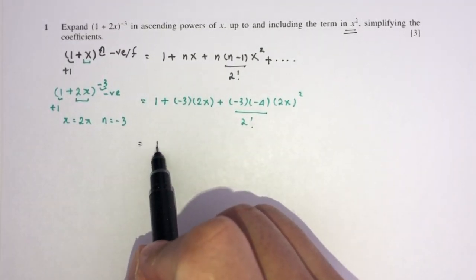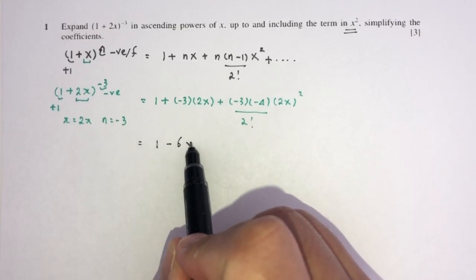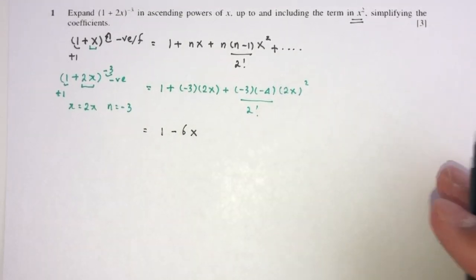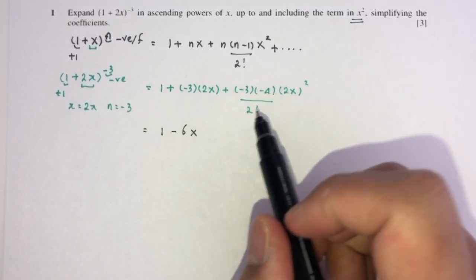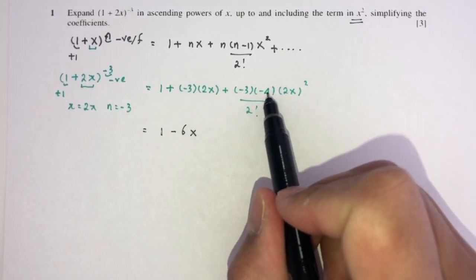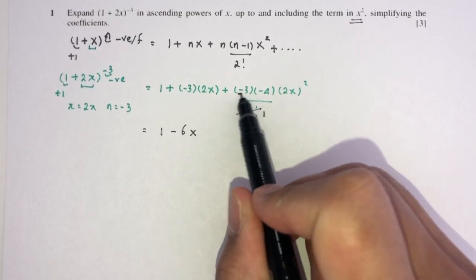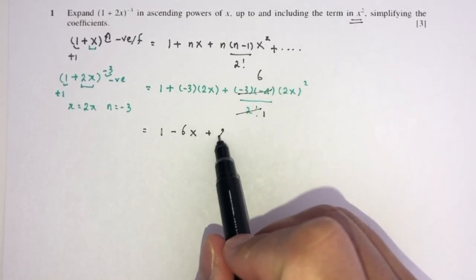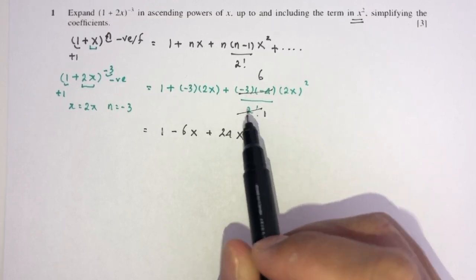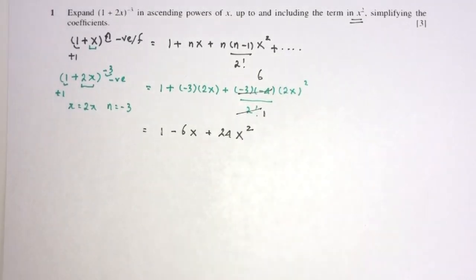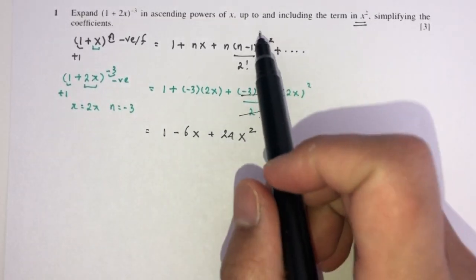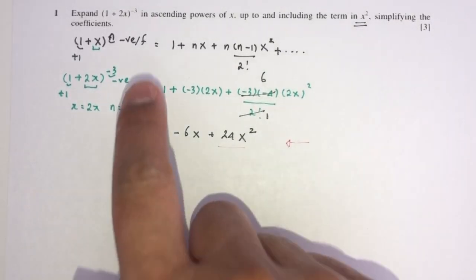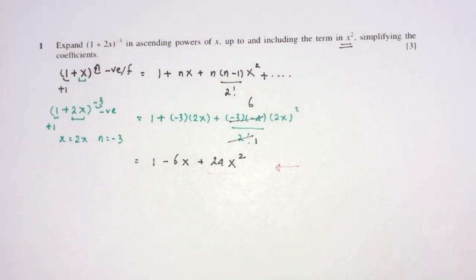You will have 1 − 6x, since 2 × (−3) = −6. Then (−3)(−4) = 12, divided by 2 gives 6, and 6 × 4 = 24, so the x² term is 24x². We stop here since we only need up to x squared. So the answer for question number 1 is 1 − 6x + 24x².